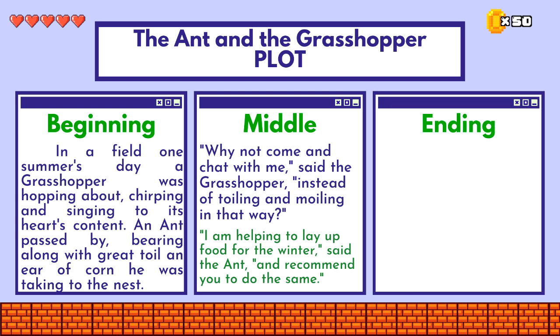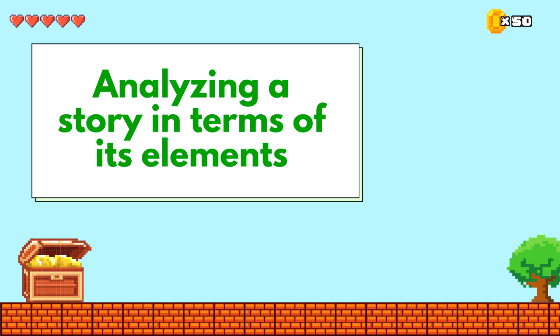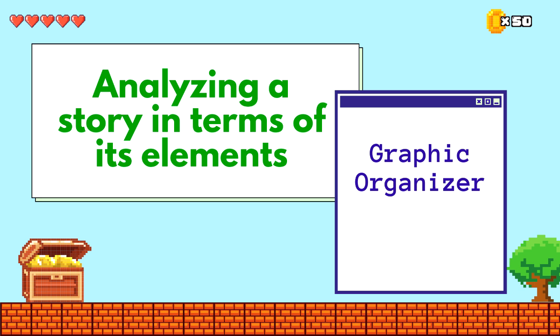The ending of the story was when winter finally came and the grasshopper had no food, while the ants were distributing the food they had collected in the summer. When analyzing a story in terms of its elements, you can also make use of a graphic organizer, such as a story map, if that helps you to organize your thoughts better.